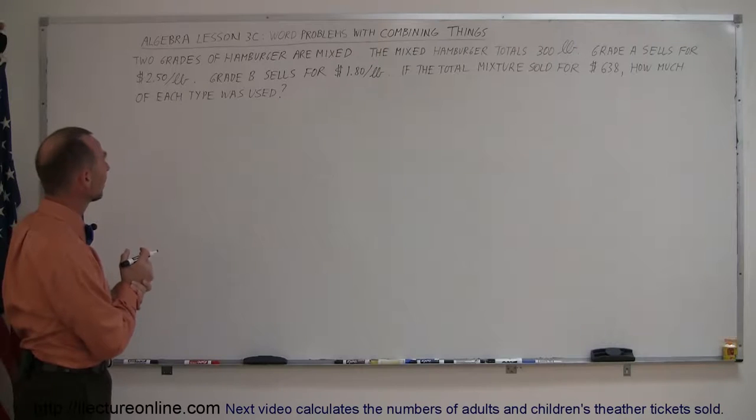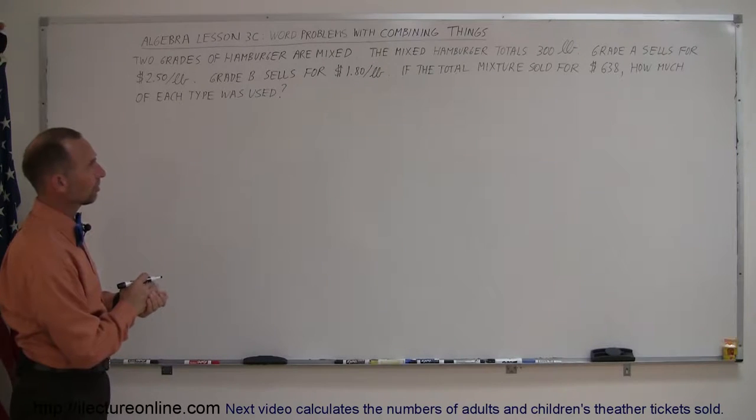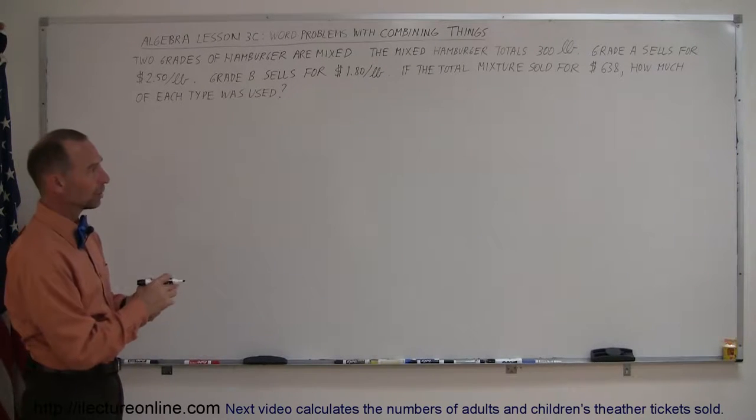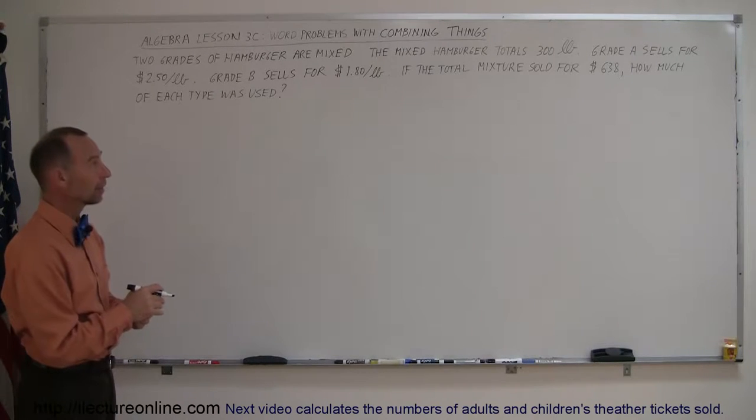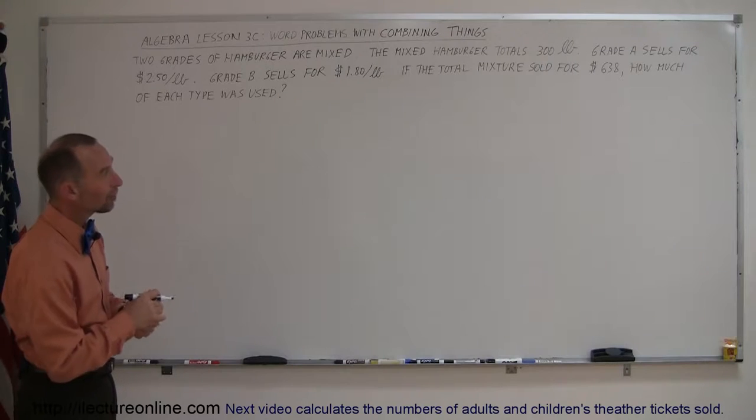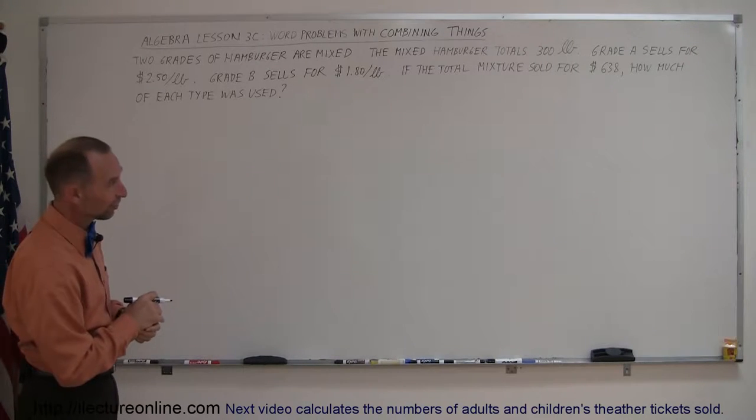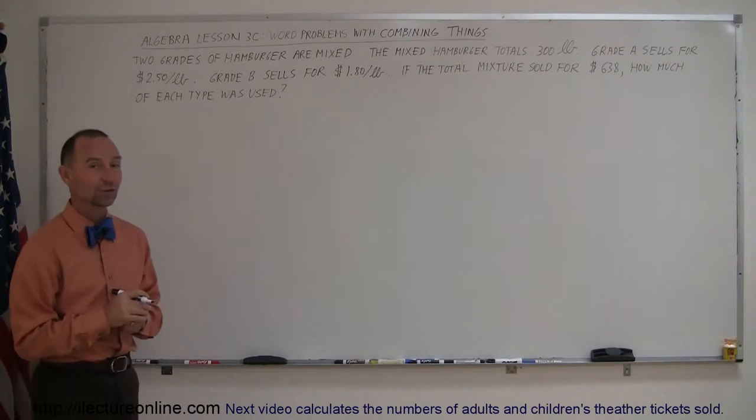Our first problem starts with two grades of hamburger are mixed. The mixed hamburger totals 300 pounds. Grade A sells for $2.50 a pound. Grade B sells for $1.80 a pound. If the total mixture sold for $638, how much of each type was used?